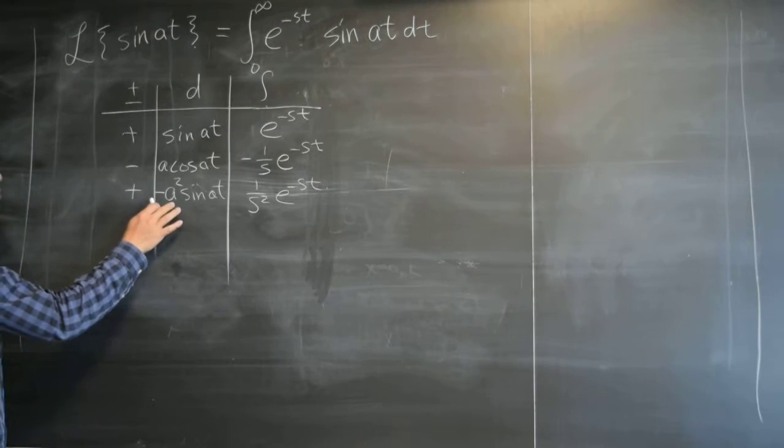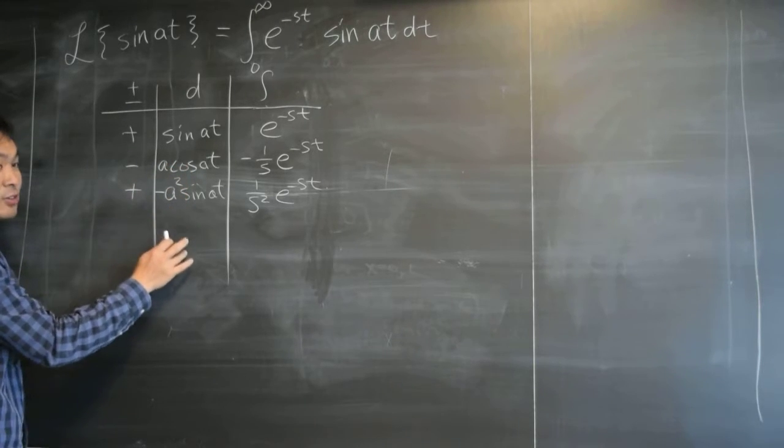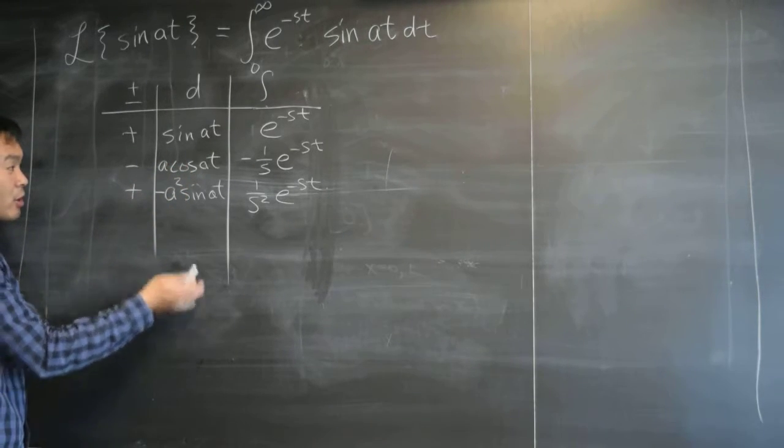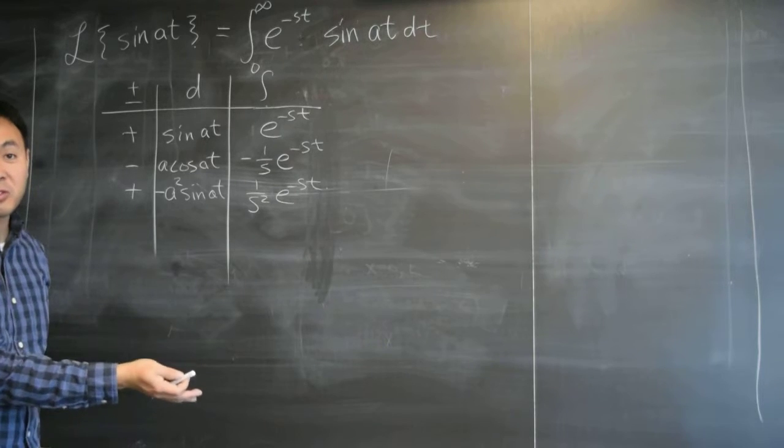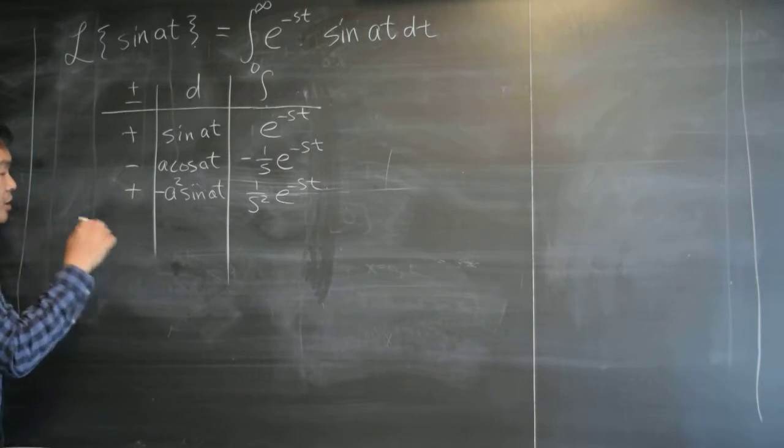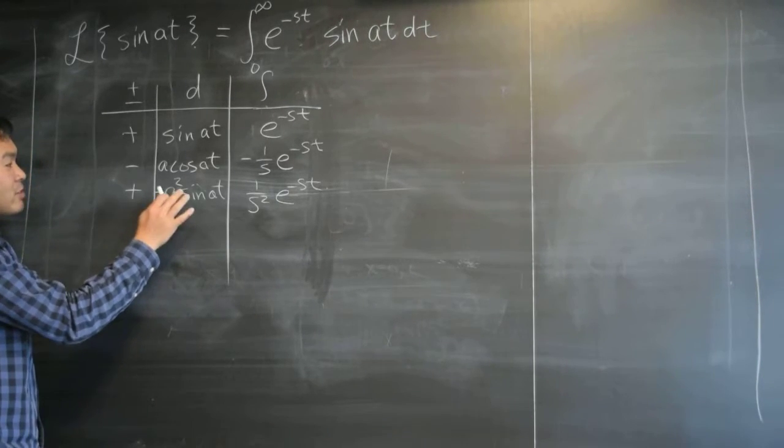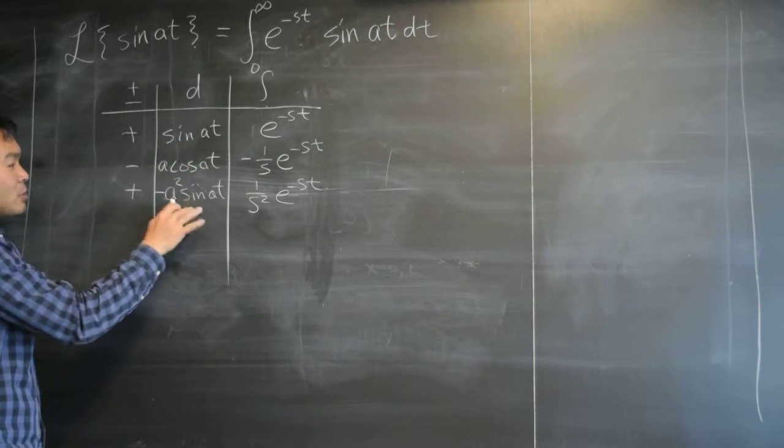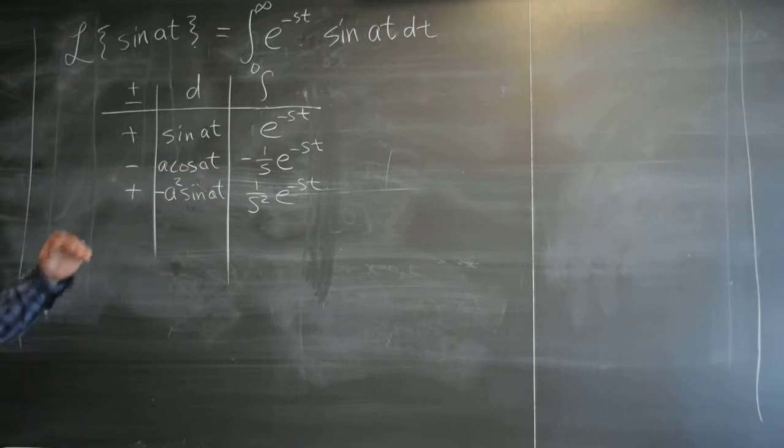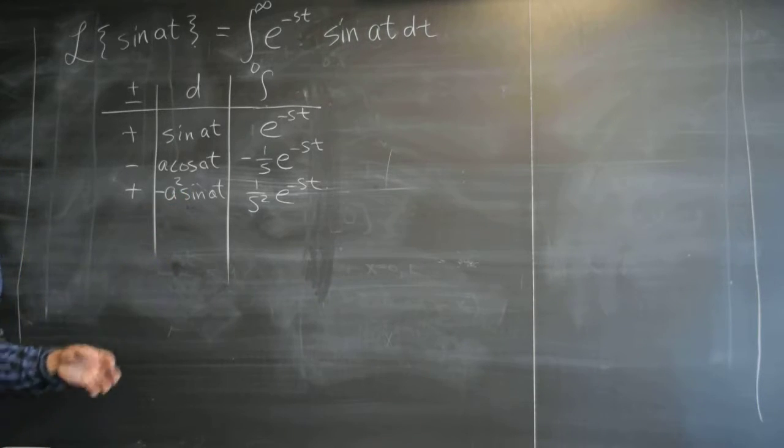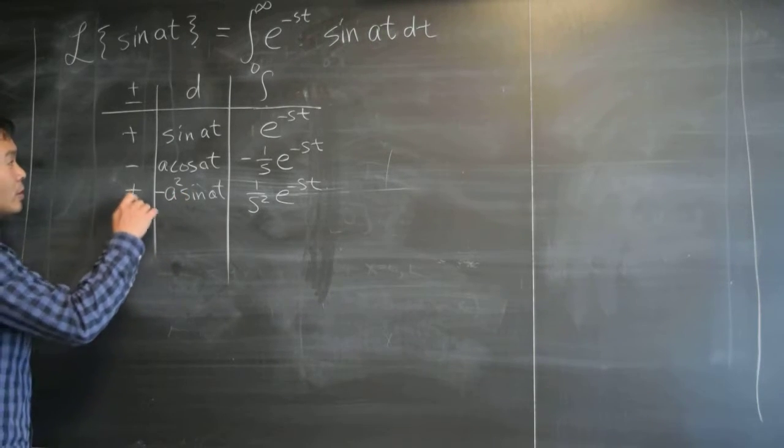Now the reason I stopped here is because there's no hope for getting a zero if you keep going on. It just repeats sine and cosine and never becomes zero. So what I did was I stopped when I saw the same thing appearing again. Now you might wonder how you can handle this, but you'll see.